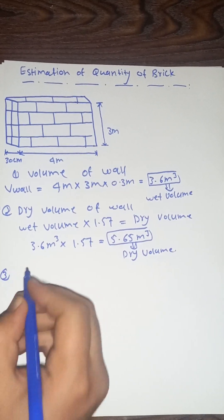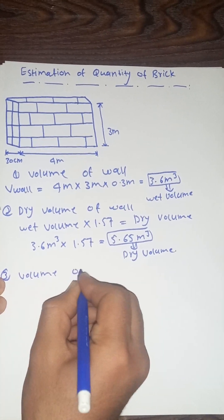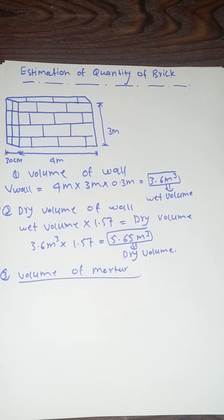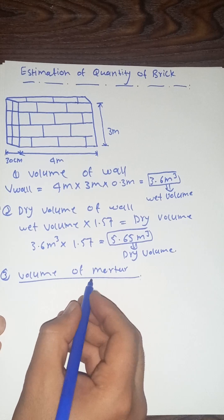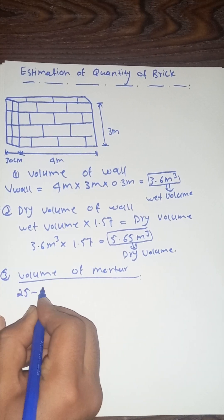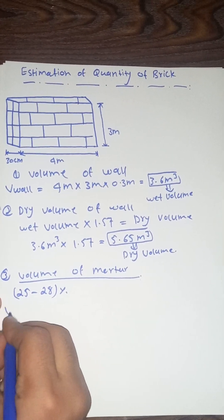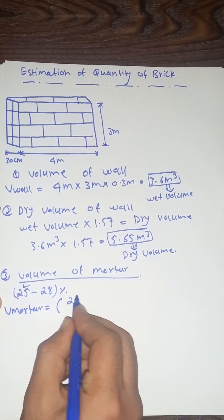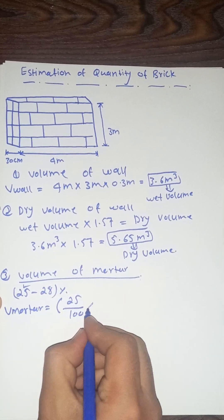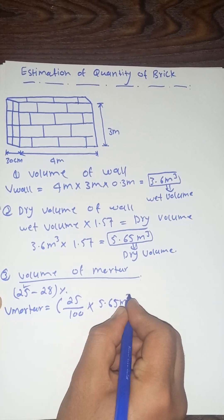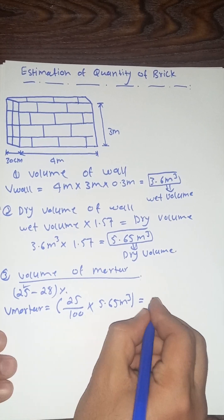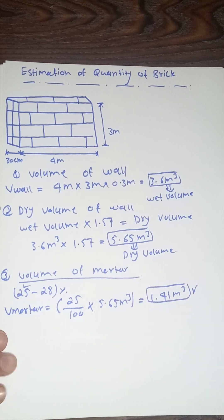The third step is to find the volume of mortar. We use mortar for the cohesion of the bricks — without mortar, we cannot place two bricks together. We use mortar at around 25% to 28%. Taking 25%, that is 25 divided by 100, multiplied by the dry volume of 5.65 m³, gives 0.25 × 5.65 = 1.41 cubic meters. This is the volume of our mortar.